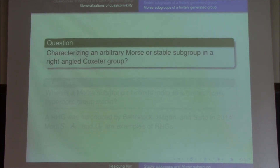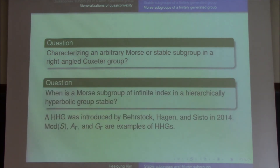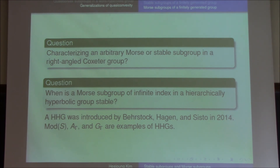So I have some questions. First, can we characterize an arbitrary Morse or stable subgroup in the right-angled Coxeter group? Because the previous result just addressed special subgroups induced by a subgraph, but what about general subgroups? Second, when is a Morse subgroup of infinite index in a hierarchically hyperbolic group stable? A hierarchically hyperbolic group was introduced by Behrstock, Hagen, and Sisto in 2014, motivated by mapping class groups and right-angled Artin groups. I'm interested in characterizing Morse subgroups and stable subgroups in this setting.